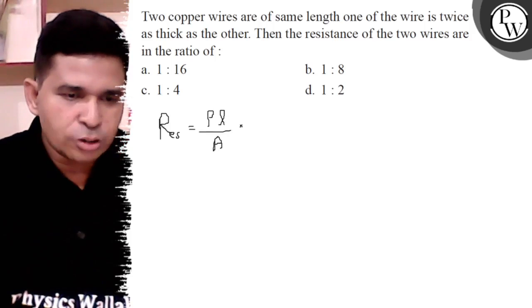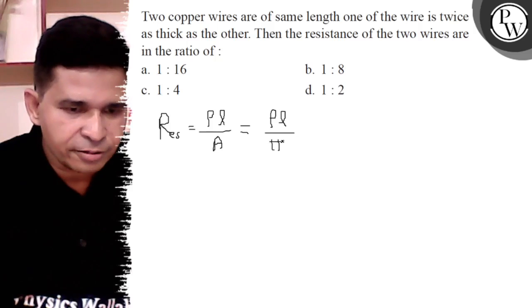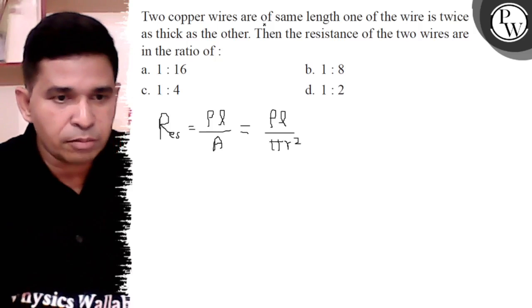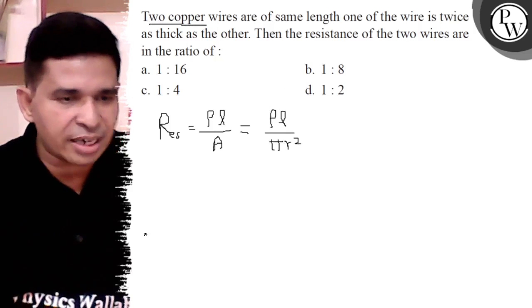So, it is rho L upon pi R square, but both wires are constructed by same material.